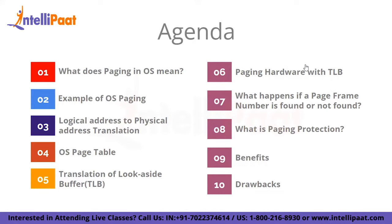Operating systems use a variety of memory allocation and management techniques. We store data in some memory management strategies in a continuous fashion, much like an array of data. On the other hand, some systems store data in segments, pieces, or blocks. Some techniques divide the memory unevenly while others divide it into fixed-size blocks. In other words, paging is a form of memory management strategy that uses non-continuous memory allocation to store data.